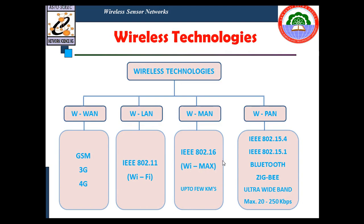As an introduction, before going to wireless sensor networks, these sensor networks come under a broader category. Wireless technologies are divided into various categories: wireless WAN consisting of GSM, 3G, 4G etc.; wireless local area networks consisting of 802.11 standards like Wi-Fi, Li-Fi, and Gi-Fi; wireless metropolitan area networks under 802.16, for example WiMAX working up to a few kilometers; and wireless personal area networks under 802.15.4 and 15.1, with examples like Bluetooth and ZigBee, with transmission capacity of 20 to 250 kbps depending on the technology and distance.